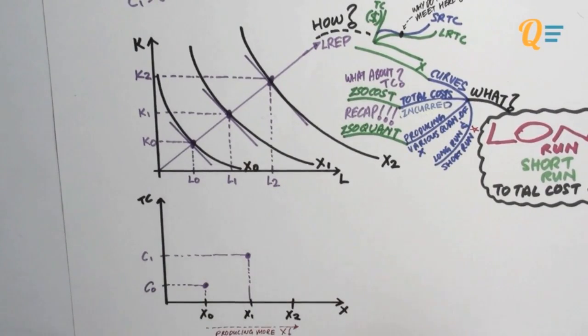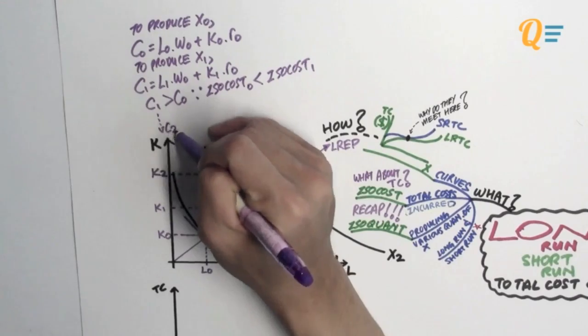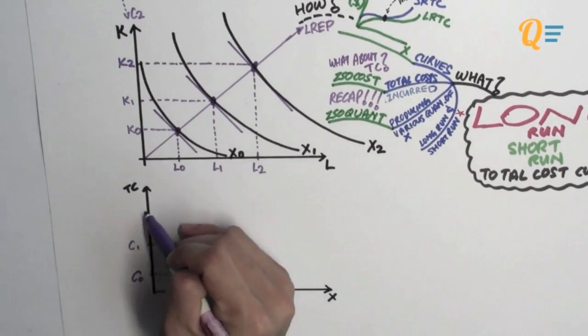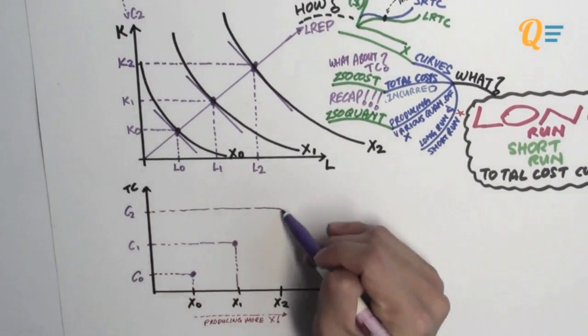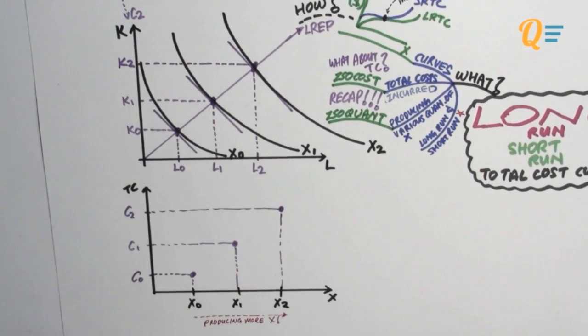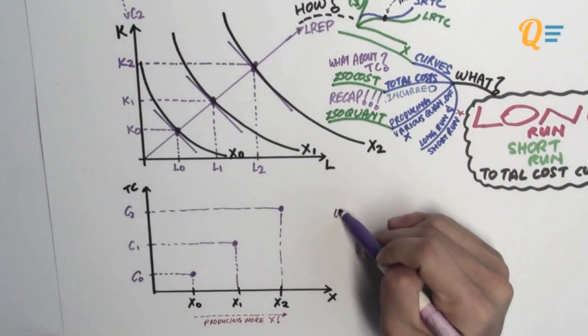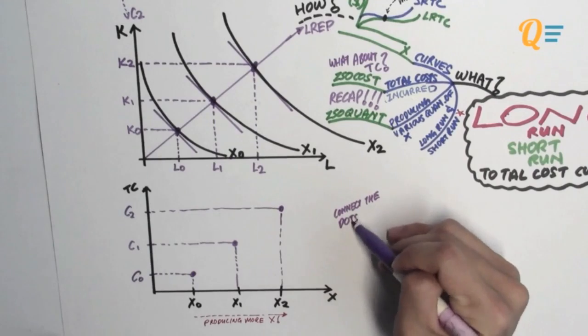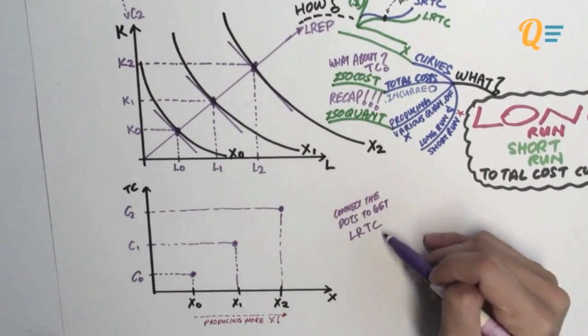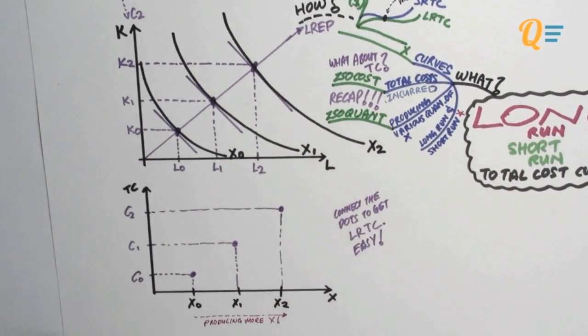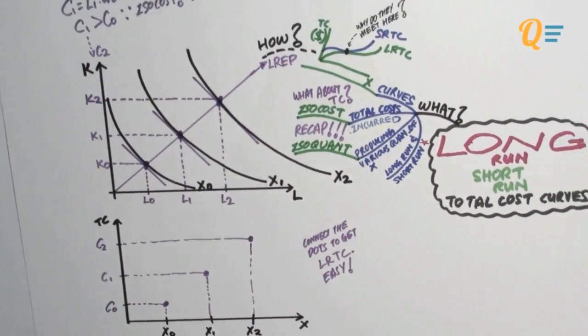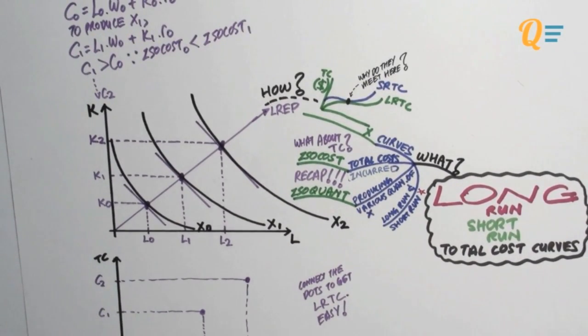So going back to the graph below, I know that C1 is going to be somewhere there for the quantity of X1 being produced. So I'm just going to do the same thing up to C2, which is the total cost for X2 being produced, and there I have the total cost. Obviously the total cost has to be increasing when you're producing more of it, right? So what you're going to do is to connect the dots to get the long-run total cost. See, is that easy?